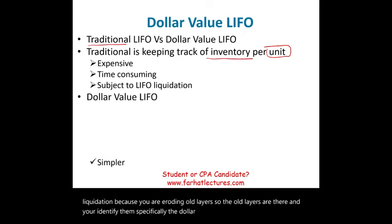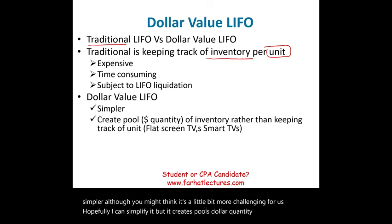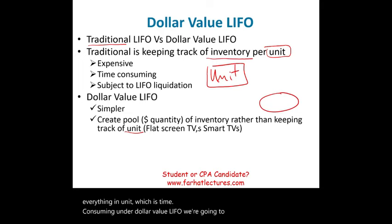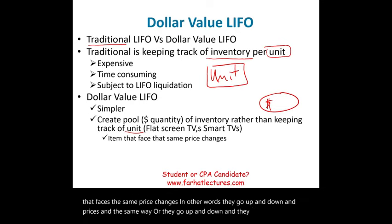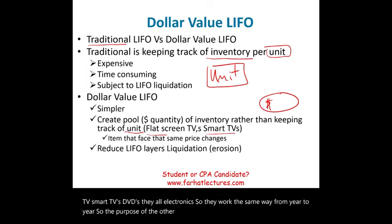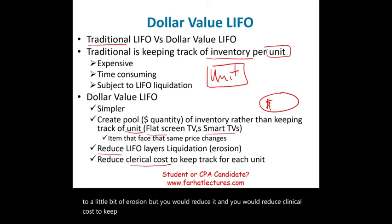Dollar value LIFO is a little bit different — it's simpler. It creates pools, grouping dollar quantities of inventory rather than tracking per unit. Items that face the same price changes — for example, flat screen TVs, smart TVs, and DVDs, which are all electronics — are grouped together. The purpose of dollar value LIFO is to reduce LIFO liquidation and reduce the clerical cost of tracking each unit separately.